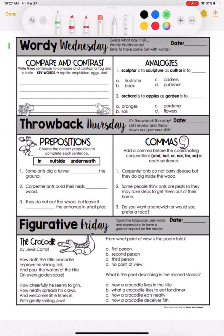Next we have Wordy Wednesday. You're going to compare and contrast in this first box — write three sentences to compare and contrast a frog and a turtle, using these keywords here in your sentences. If you don't have room to write three sentences in this box, you could write it on another piece of paper.